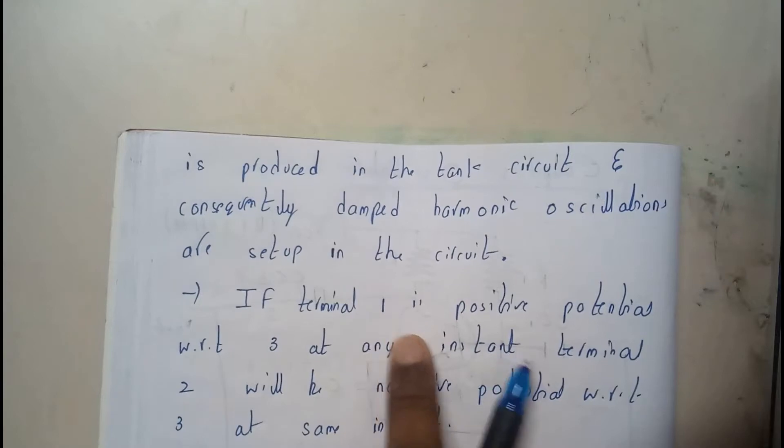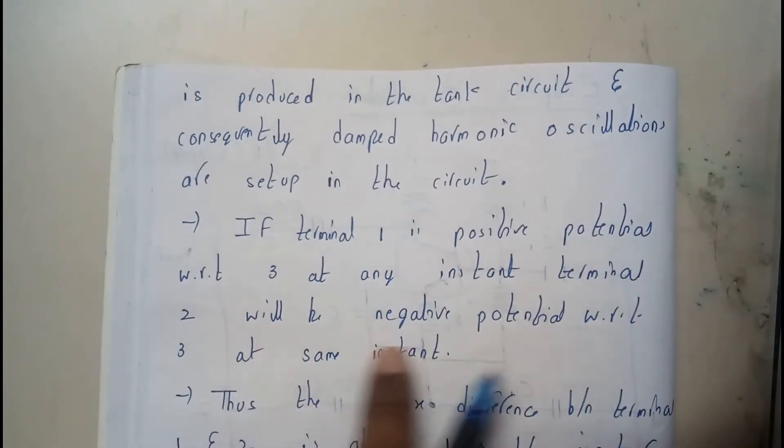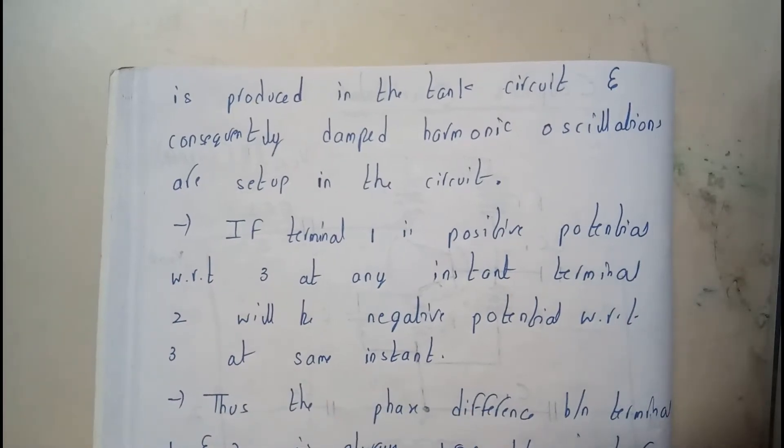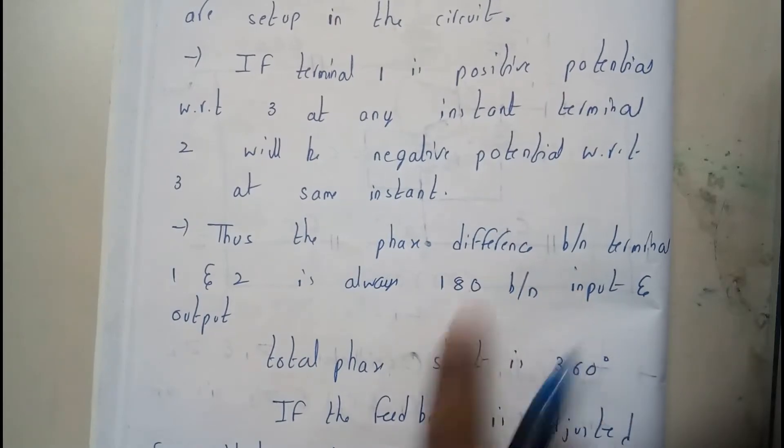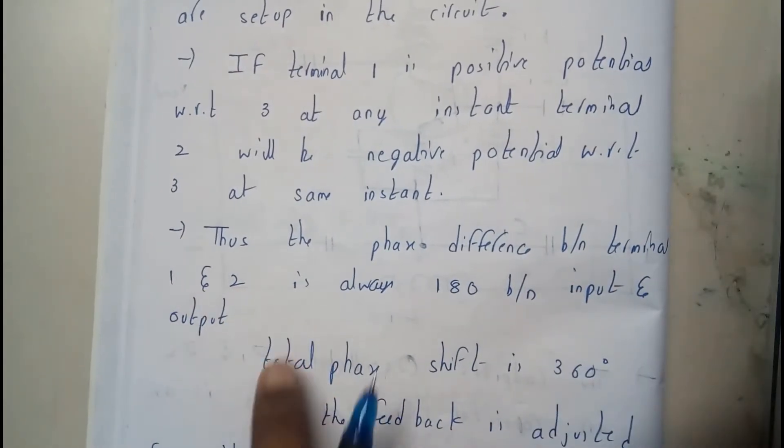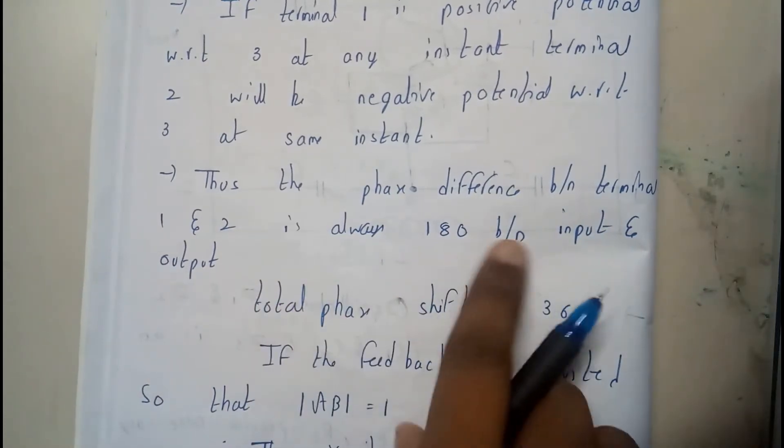If the terminal 1 is positive with respect to 3 at an instant, the terminal 2 will be negative with respect to 3 at the same instant. And thus the phase shift or phase difference between the terminal 1 and 2 is always 180 degrees in between input and output.